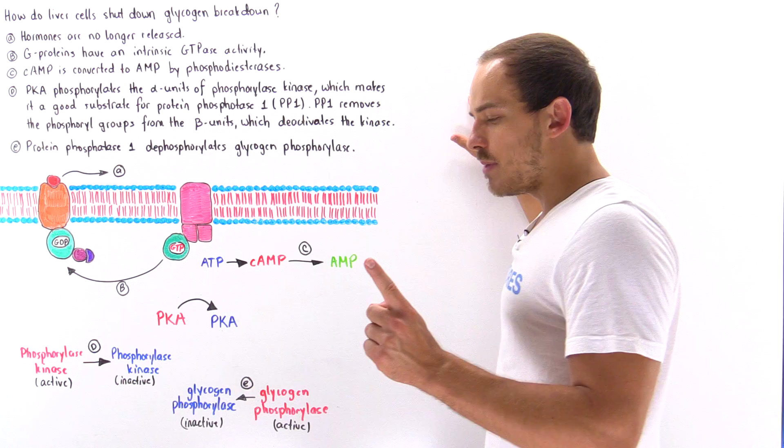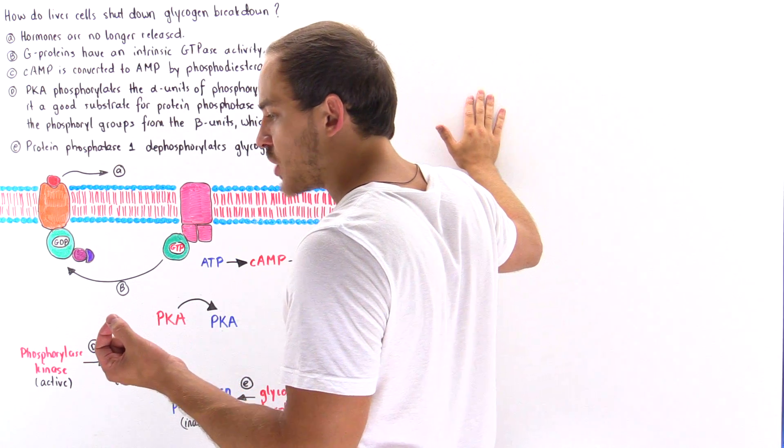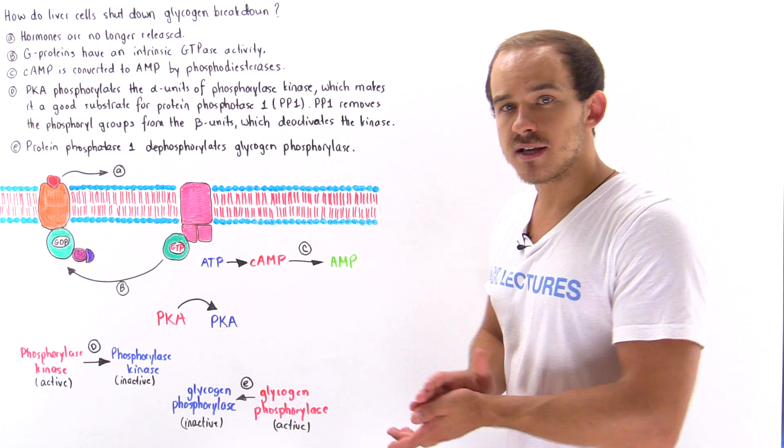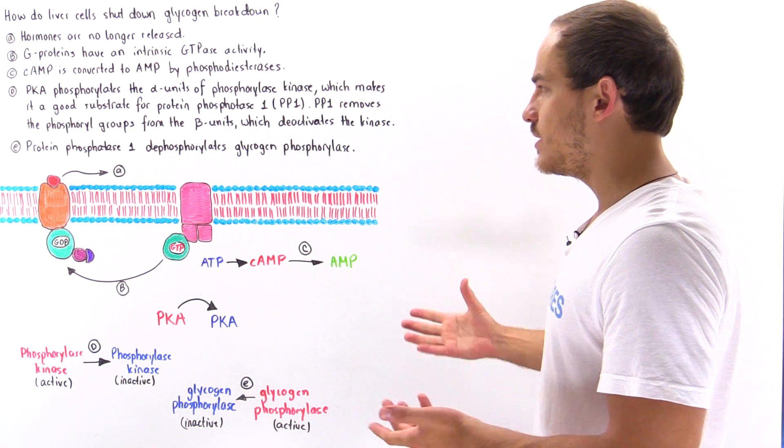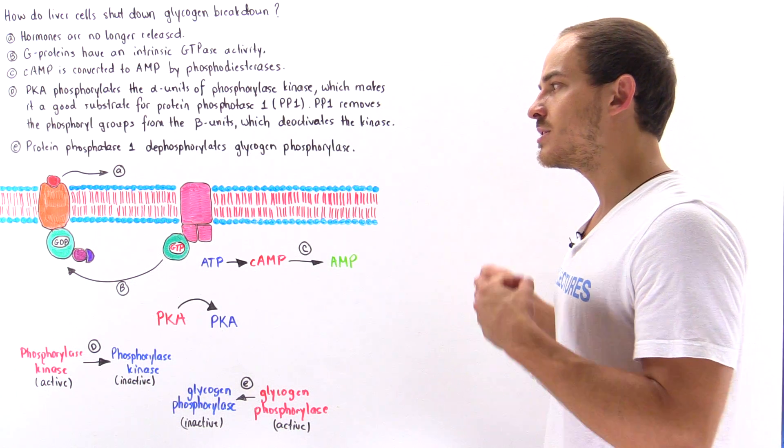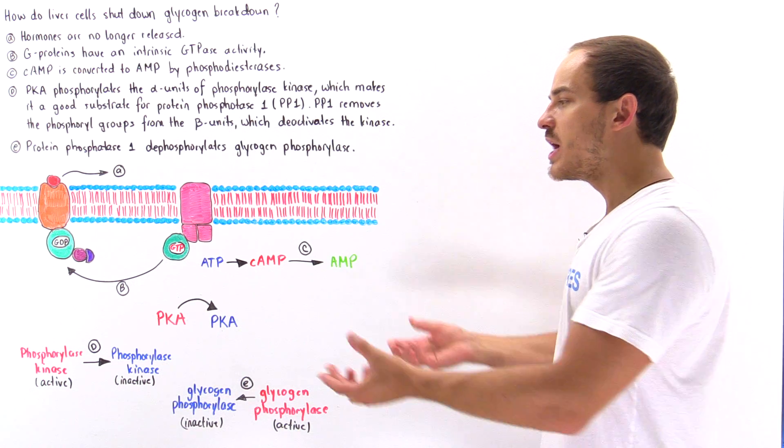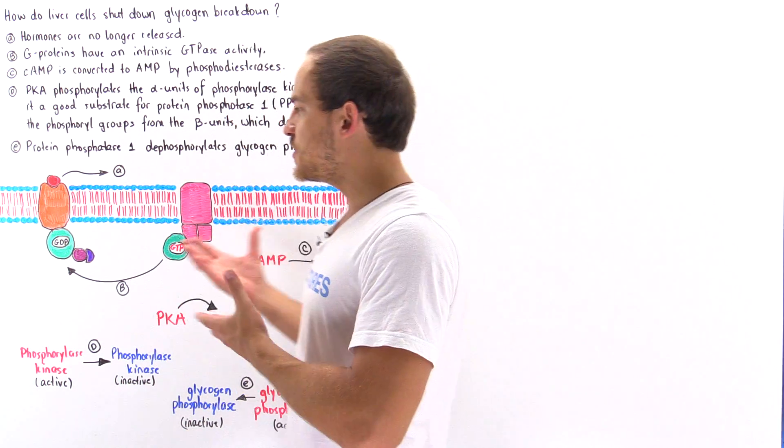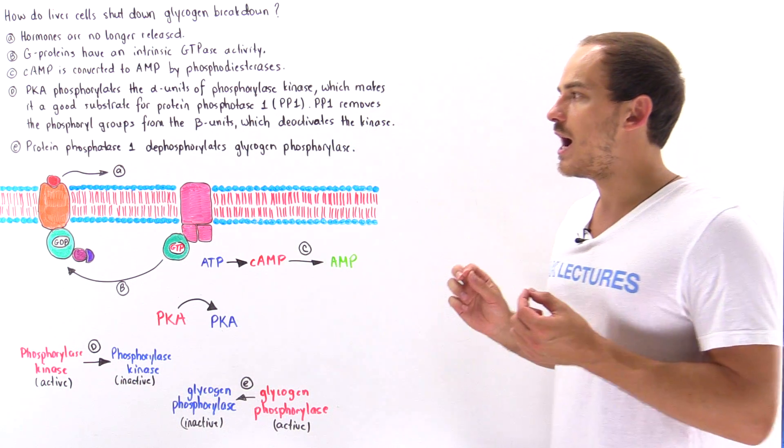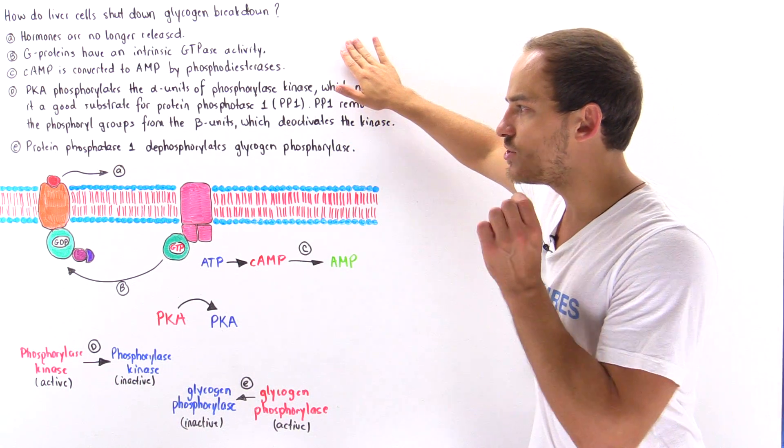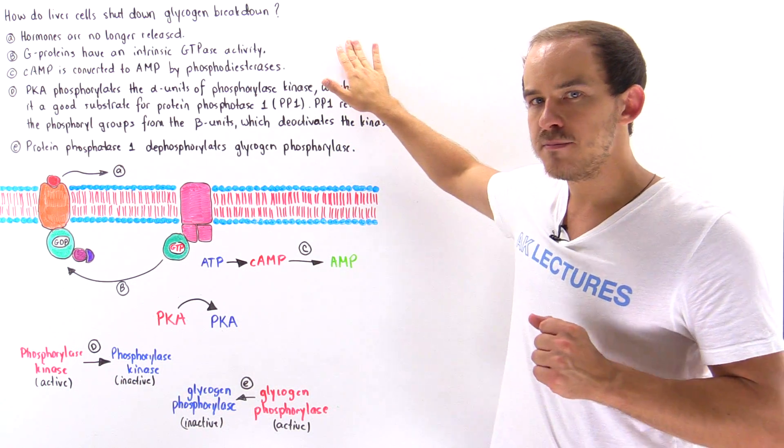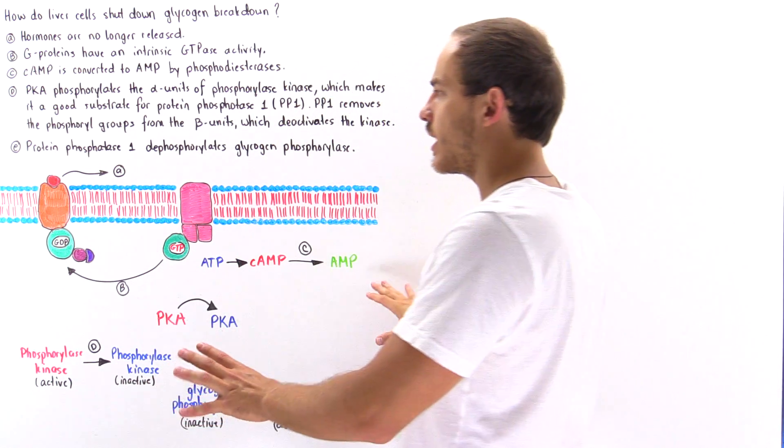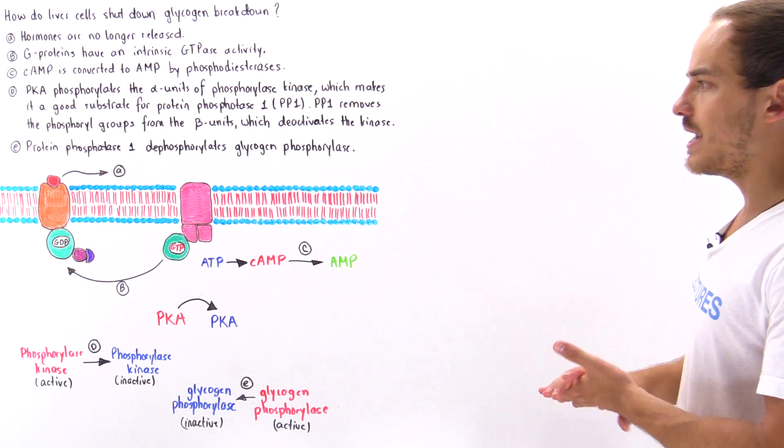The first method by which our body is able to shut down the glucagon signal transduction pathway that initiates glycogen breakdown is to stop releasing the hormones that initiate this process in the first place. In this case it's glucagon. So glucagon is no longer released, which means glucagon can no longer act as a primary messenger and this pathway will no longer be initiated.